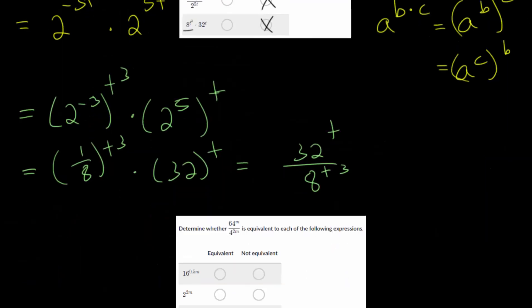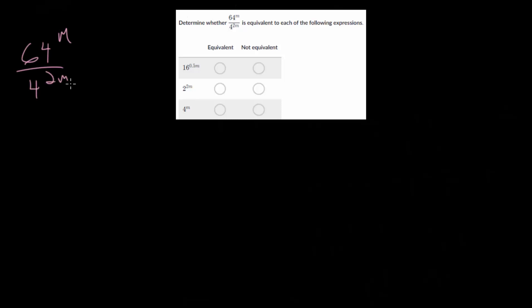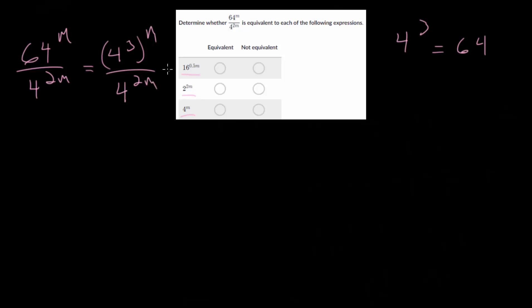Let's move on and do several more examples. For each of these, I recommend just rewriting it and asking yourself what you can do, trying to play around with it. So we have 64 to the m over 4 to the 2m. To guide how you manipulate this, take a look at the answers to see the possible choices. One of them is to rewrite everything with a base of 4. We can ask: what power do we raise 4 to in order to get 64? We know 4 to the third power is 64. So we rewrite this as 4 to the third, all raised to the m power, divided by 4 to the 2m. A power raised to a power means we multiply, so this becomes 4 to the 3m divided by 4 to the 2m.